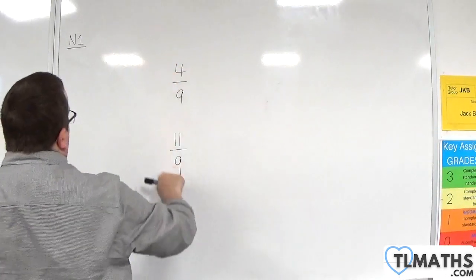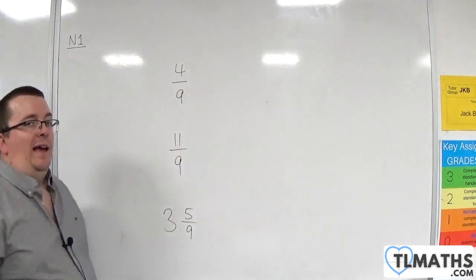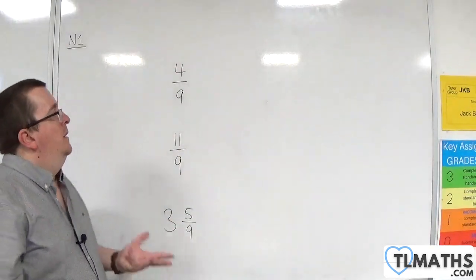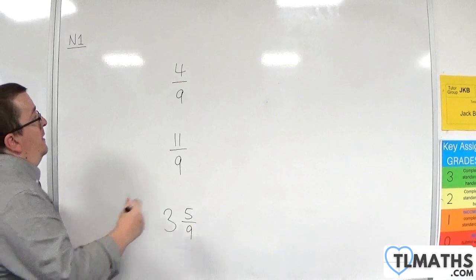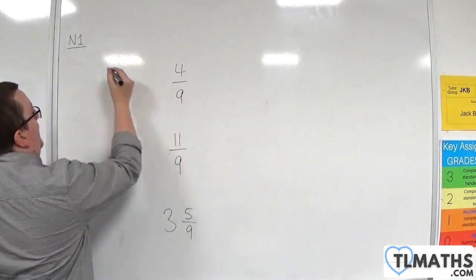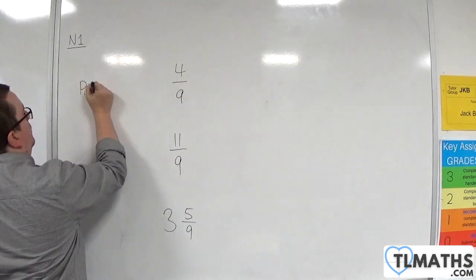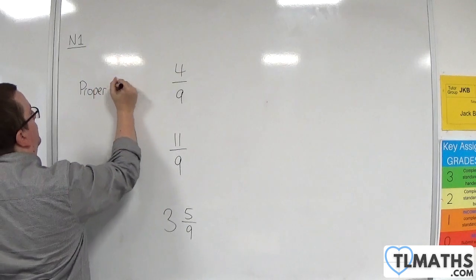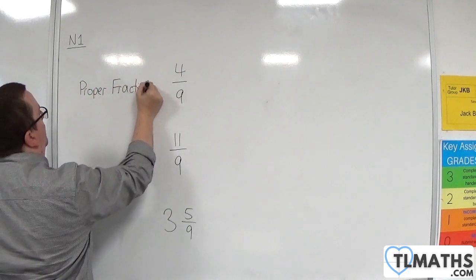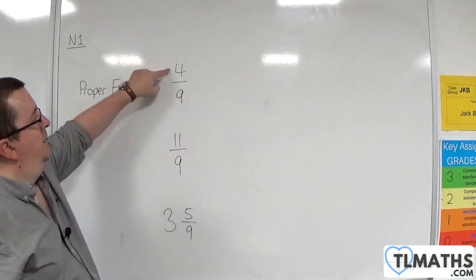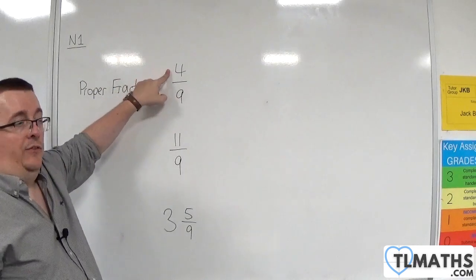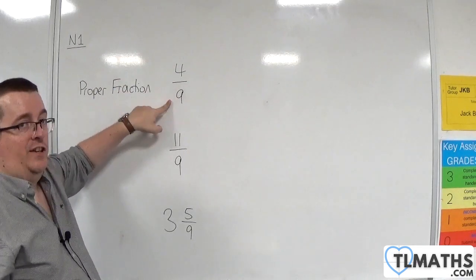Now, you'll recognize both of these, of course—4 ninths and 11 ninths—as just fractions. However, we refer to 4 ninths as a proper fraction because the numerator is less than or equal to the denominator.